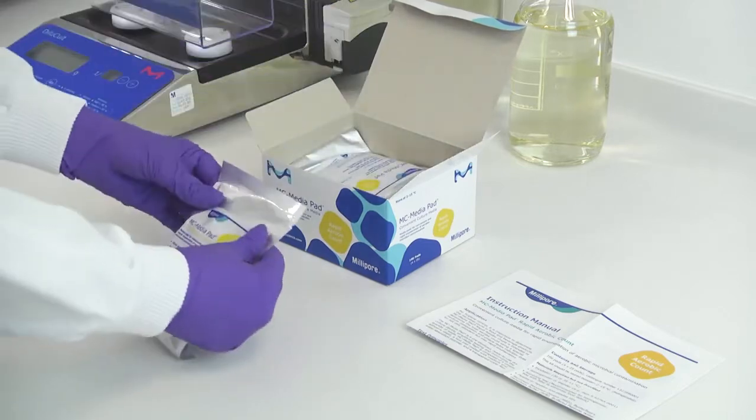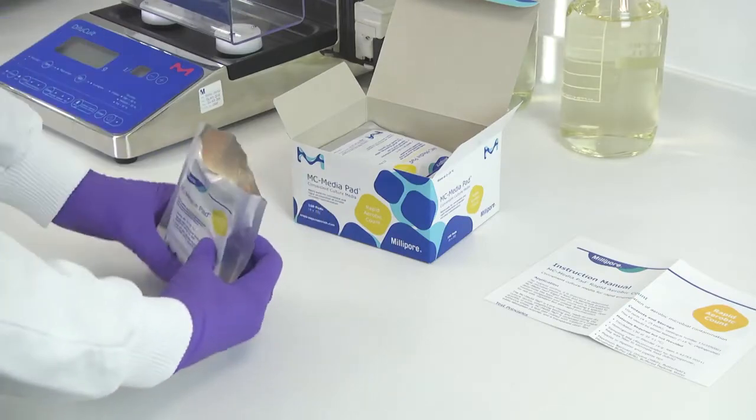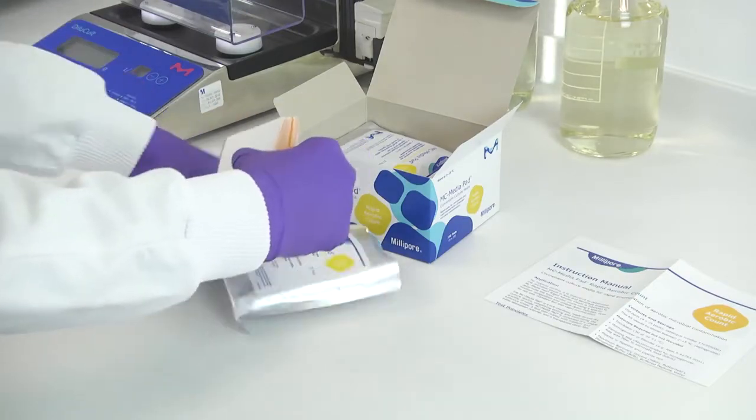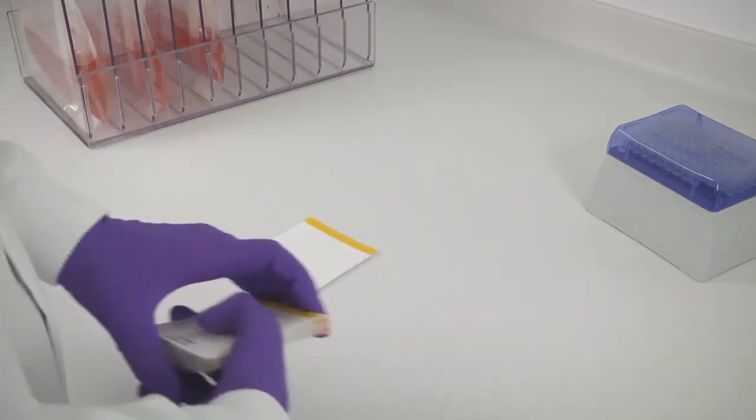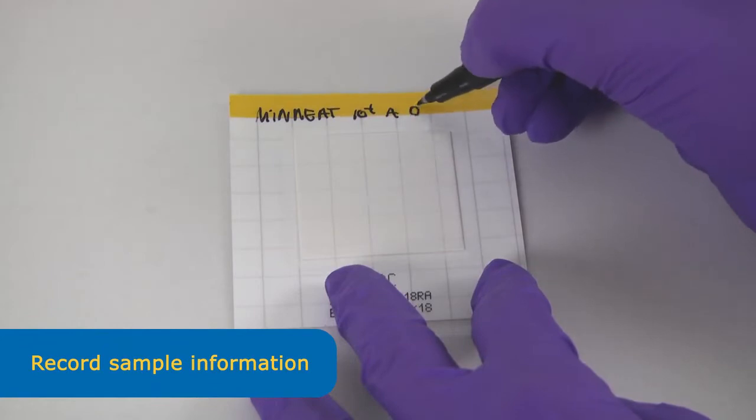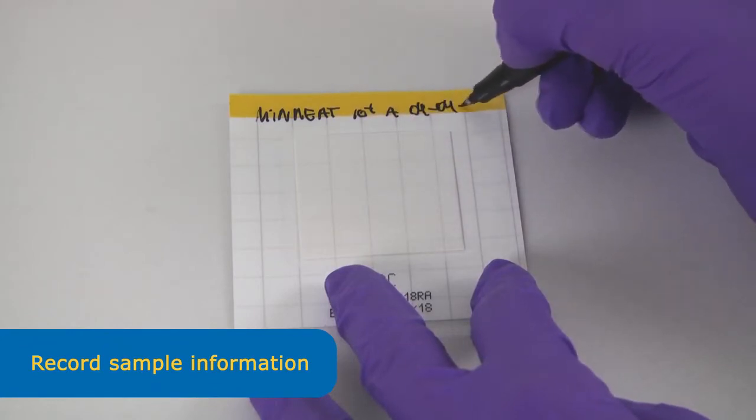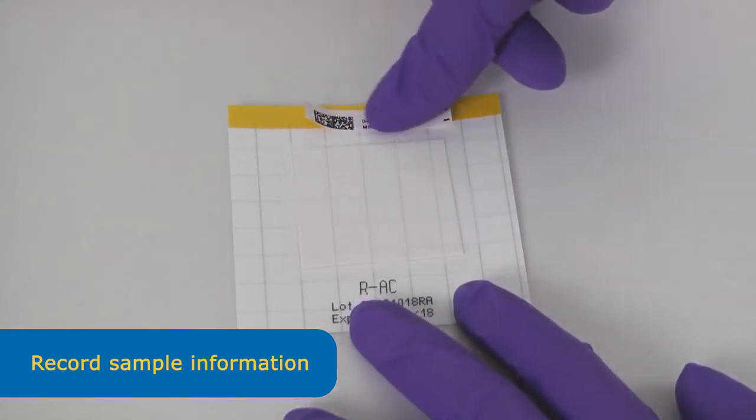The MC MediaPad workflow comprises 4 easy steps. To start the testing, take the pad out of the bag and place it on the bench. You have space on each pad to write sample information or attach an adhesive barcode label.